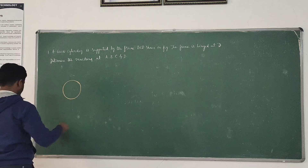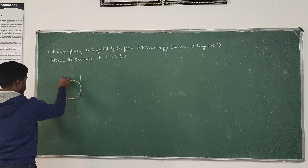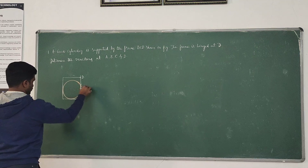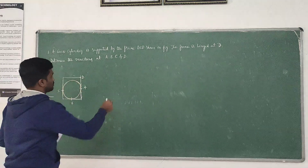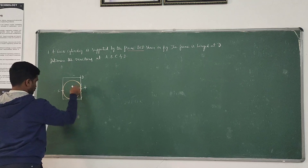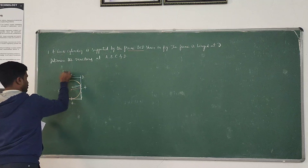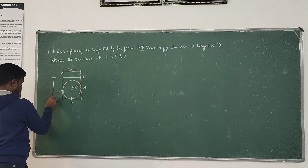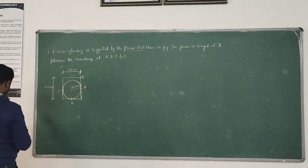This sphere is connected at A, B, C, and D. BCD is the frame. The radius equals 150 mm. The horizontal distance is 300 mm and the vertical distance is 600 mm.